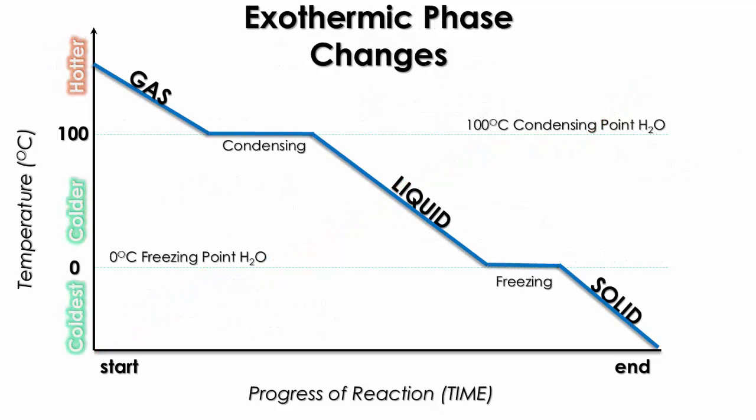The same thing happens only in reverse for the exothermic phase change. In the exothermic phase change diagram, we're going from a very hot temperature to a very cold temperature — from a gas to a solid — meaning we're losing energy, which is what we call an exothermic reaction. As our gas is being cooled, we're going to be using Q = MC negative ΔT, because when your final temperature and your starting temperature are subtracted, it always gives a negative value.